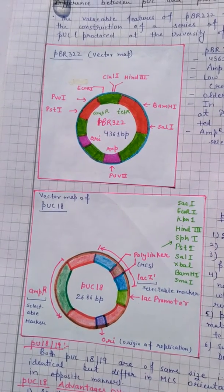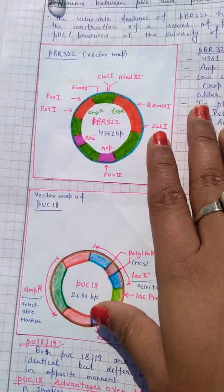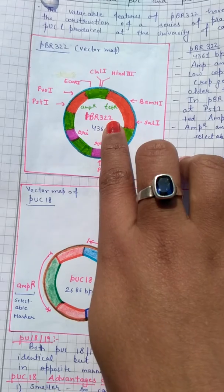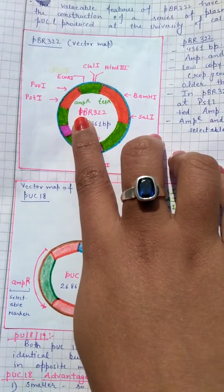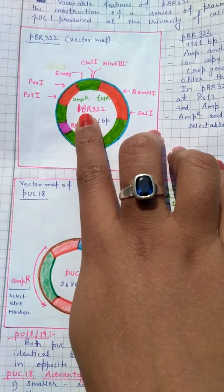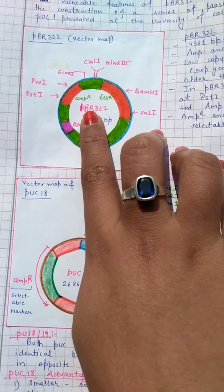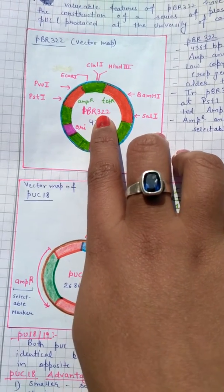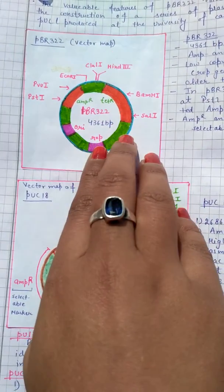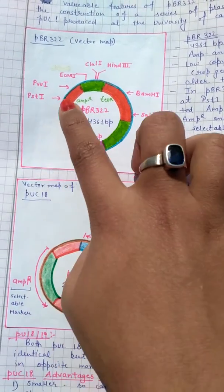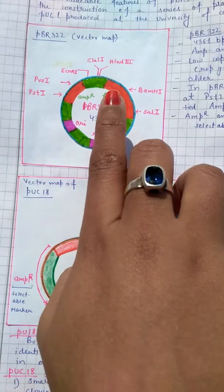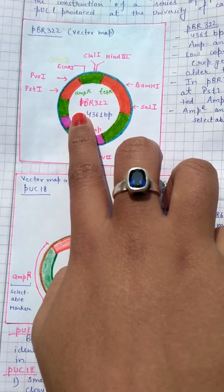Both a bacterial chromosome and a plasmid can act as a vector. There are some important features of a plasmid acting as a vector. In this diagram you can see pBR322. Here 'p' is denoted for plasmid, 'B' and 'R' are the scientists Bolivar and Rodrigo, and 322 is the order of discovery. This plasmid vector contains 4361 base pairs.